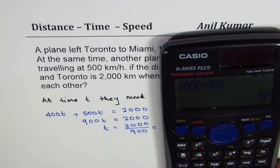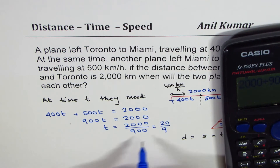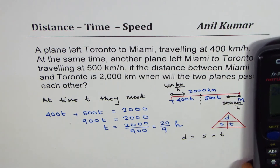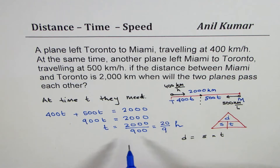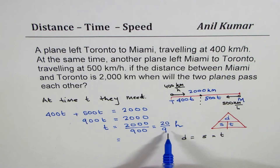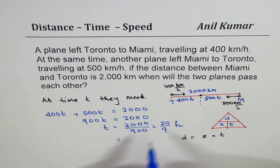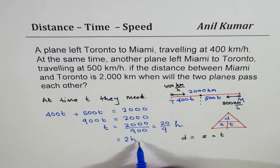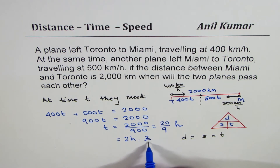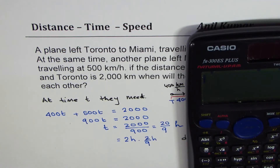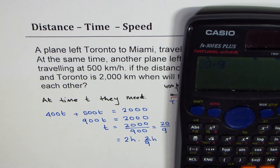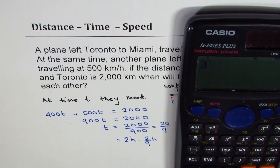We can convert this to decimals. 20 over 9 is in hours. We can write this in hours and minutes. 20 divided by 9 is 2, so 2 hours, with a remainder of 2. So we get 2 hours and 2 over 9 hours. In decimals, 20 over 9 is 2.2 recurring. To convert 2 over 9 to minutes, we multiply by 60: 2 times 60 divided by 9 equals approximately 13.3 minutes.